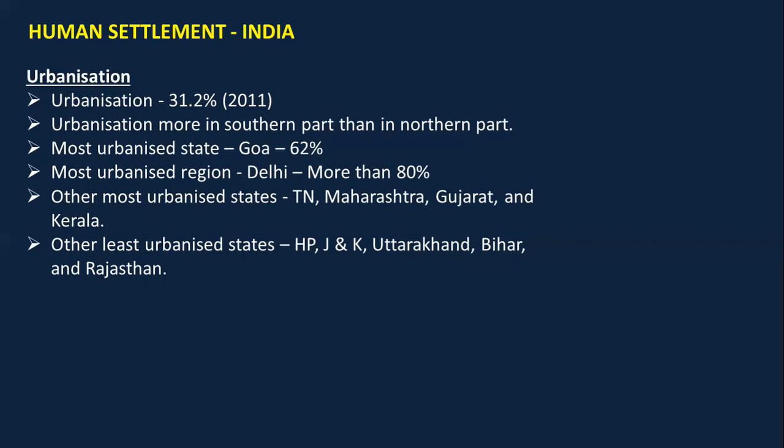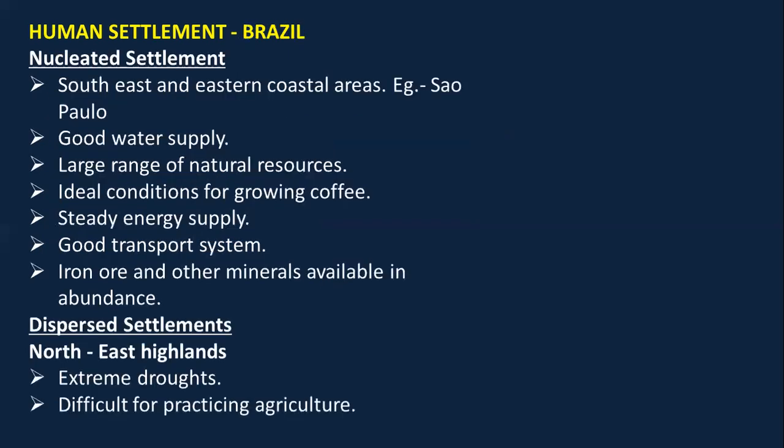Understand the distinction: the most urbanized region is Delhi and the most urbanized state is Goa, because Delhi is not a state — it is a Union Territory. Other urbanized states are Tamil Nadu, Maharashtra, and Gujarat. Least urbanized states are Himachal Pradesh, Jammu & Kashmir, Uttarakhand, and Bihar — places with extreme climatic conditions.